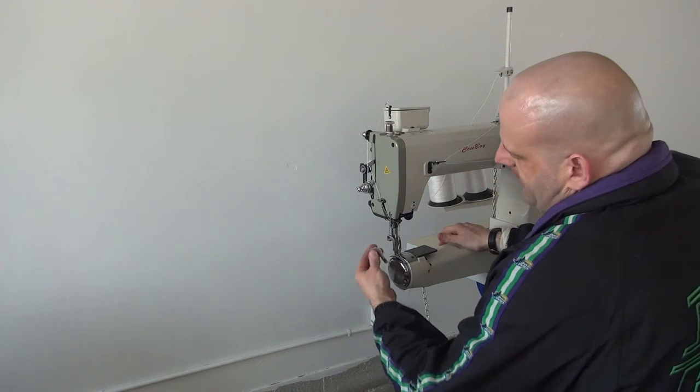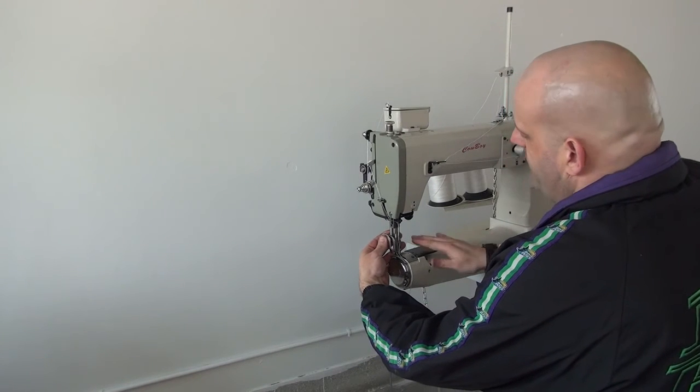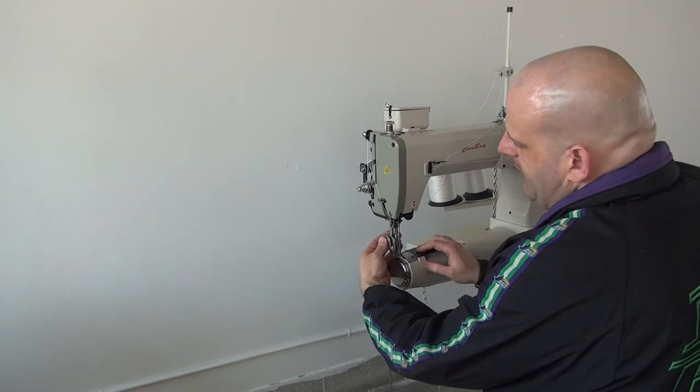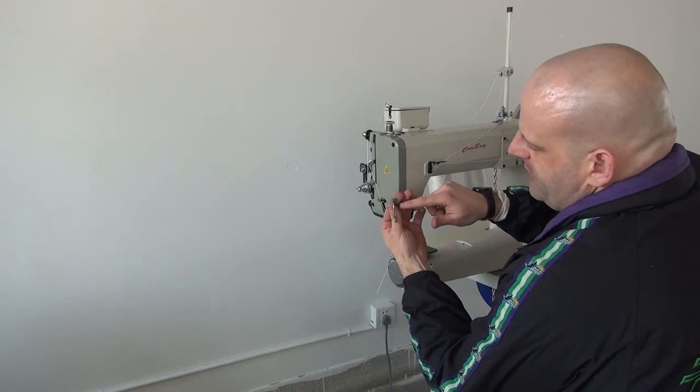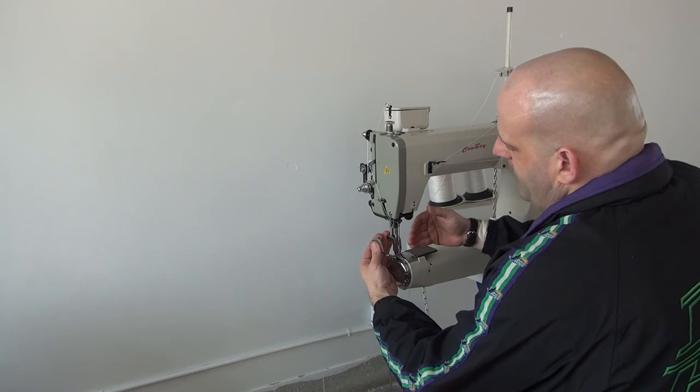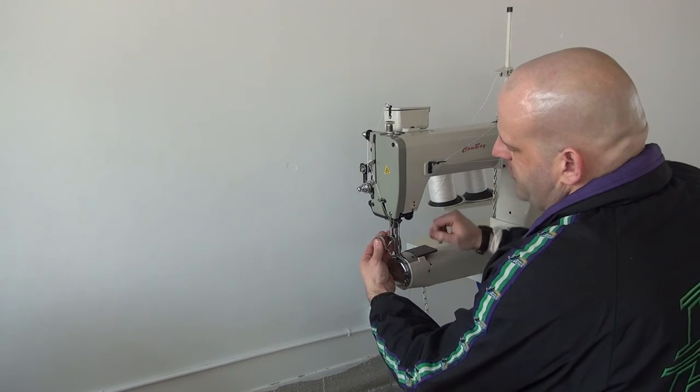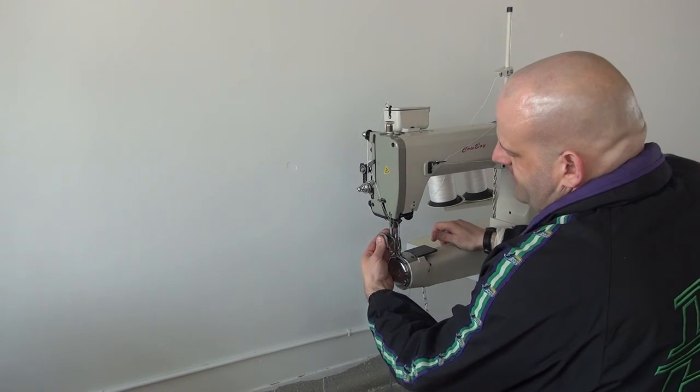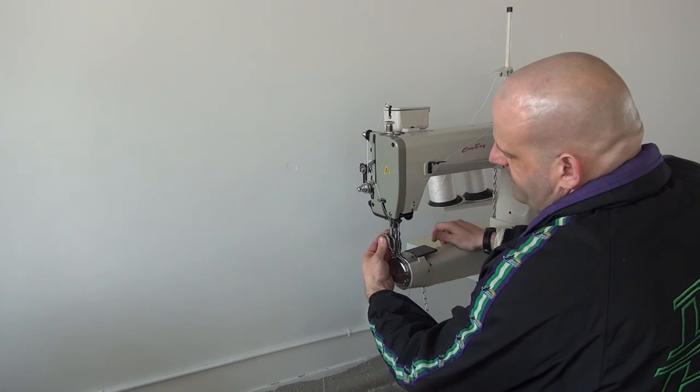In addition to that, we also have our left toe presser foot. And it works very nicely in conjunction with the material guide because the right toe, as you can see on the presser foot, is missing. So you can bring the material guide all the way into the extreme right hand side of the center presser foot. And so that lets you get into really tight places very easily.